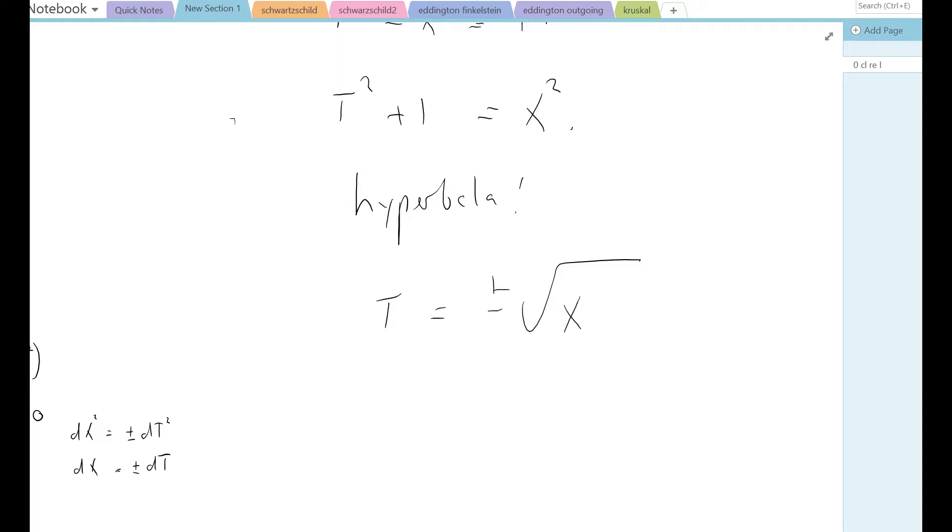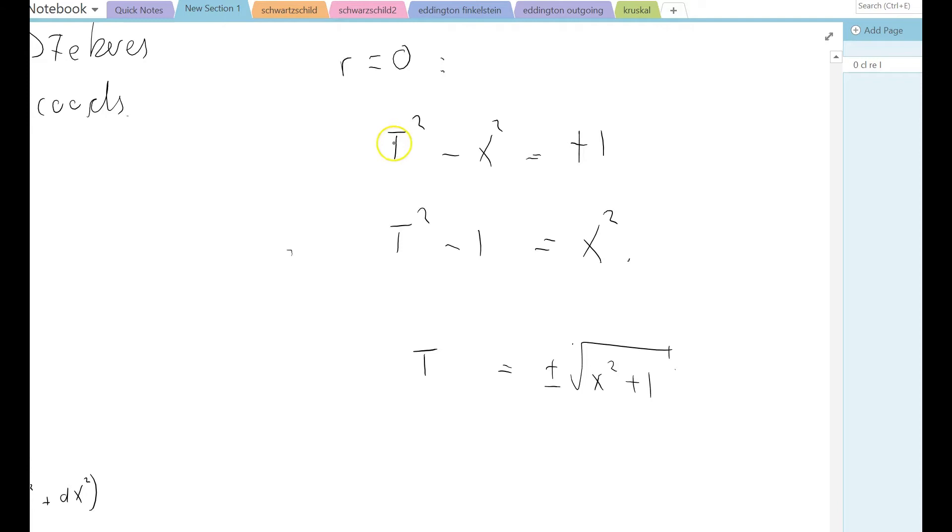General relativity, step by step. I think I made a sign error in my previous one. It should be t squared minus 1 equals x. It's easy to do because there's different conventions for the signature of the metric tensor. So t equals plus or minus the square root of x squared plus 1. That's what I should have said anyway.